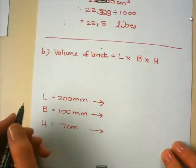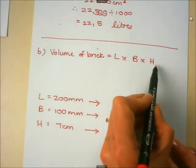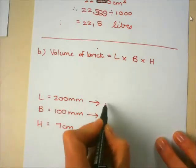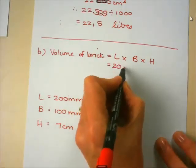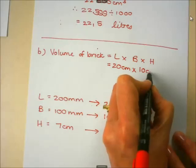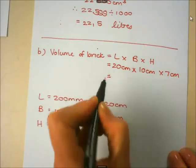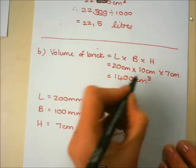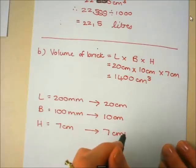The formula for the volume of the brick is length times breadth (or width) times height. We change 200 millimetres to 20 centimetres, so that's 20 centimetres times 10 centimetres times 7 centimetres. The answer is 1,400 centimetres cubed. I hope some of you also got that answer — 1,400 centimetres cubed.